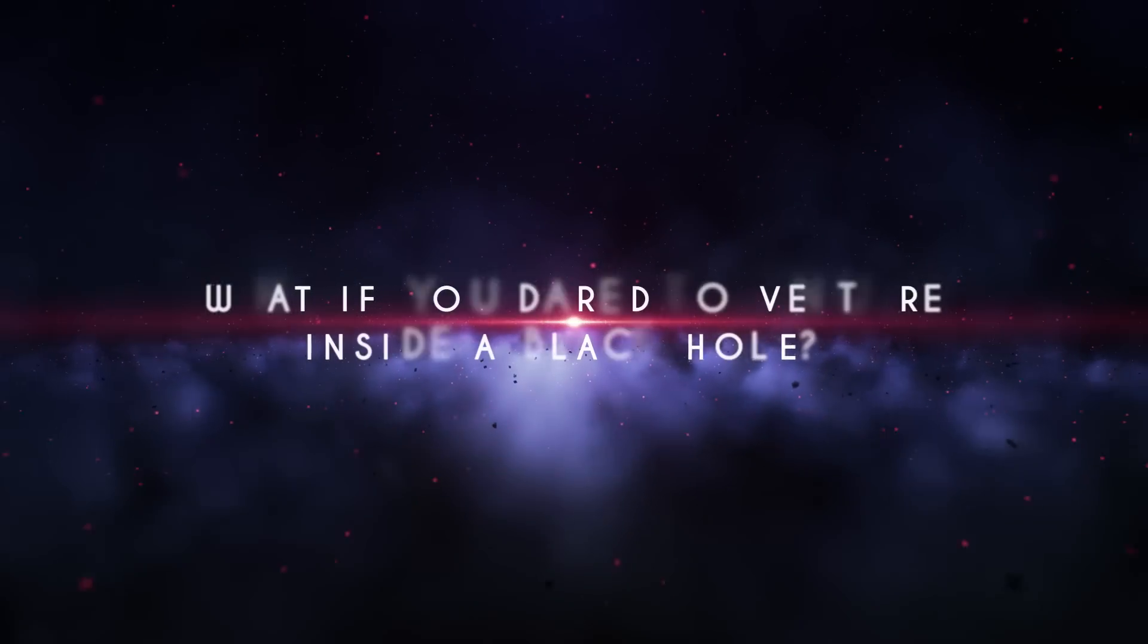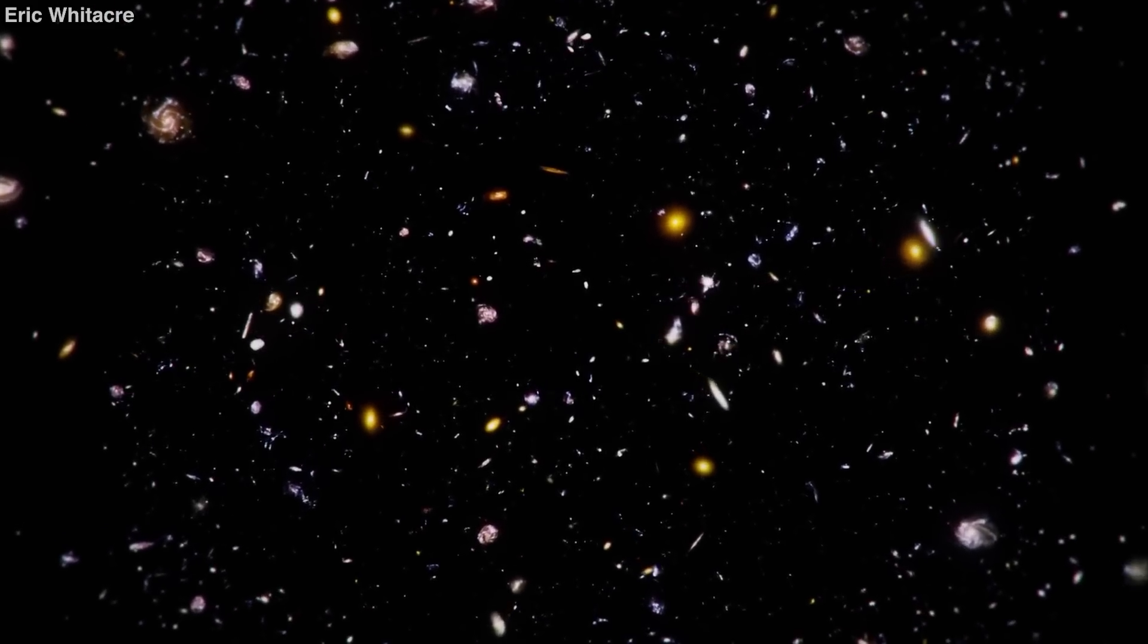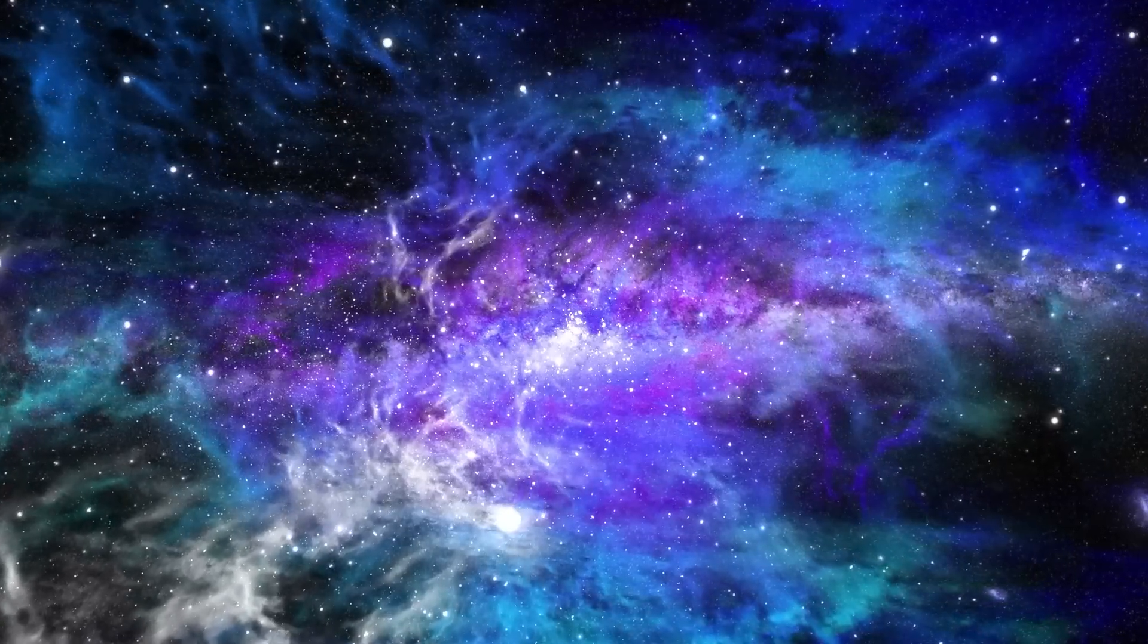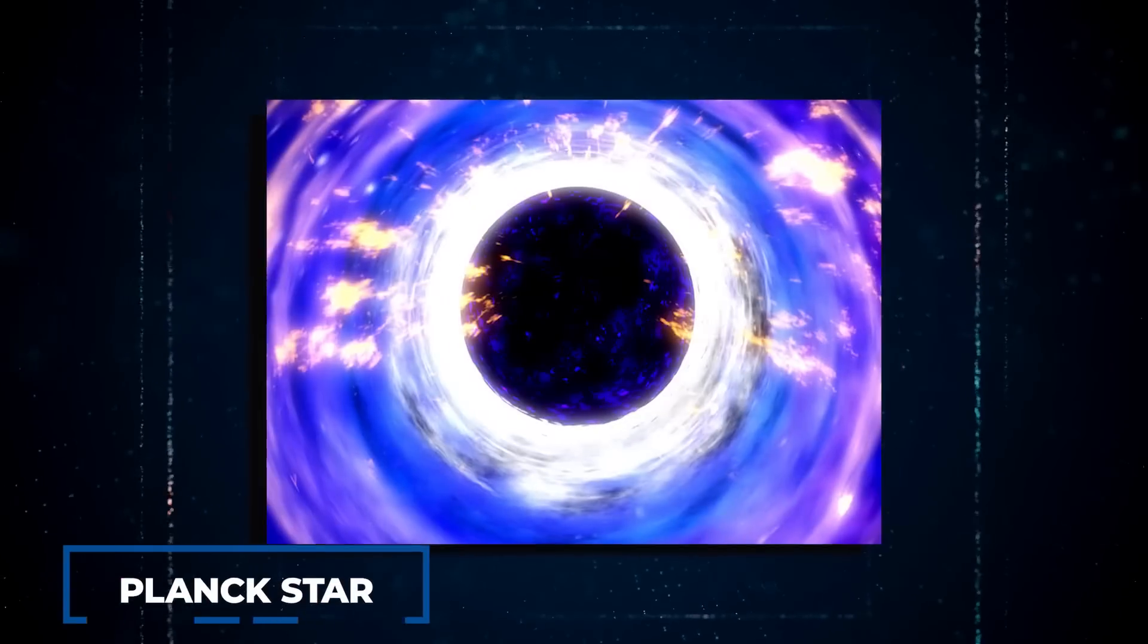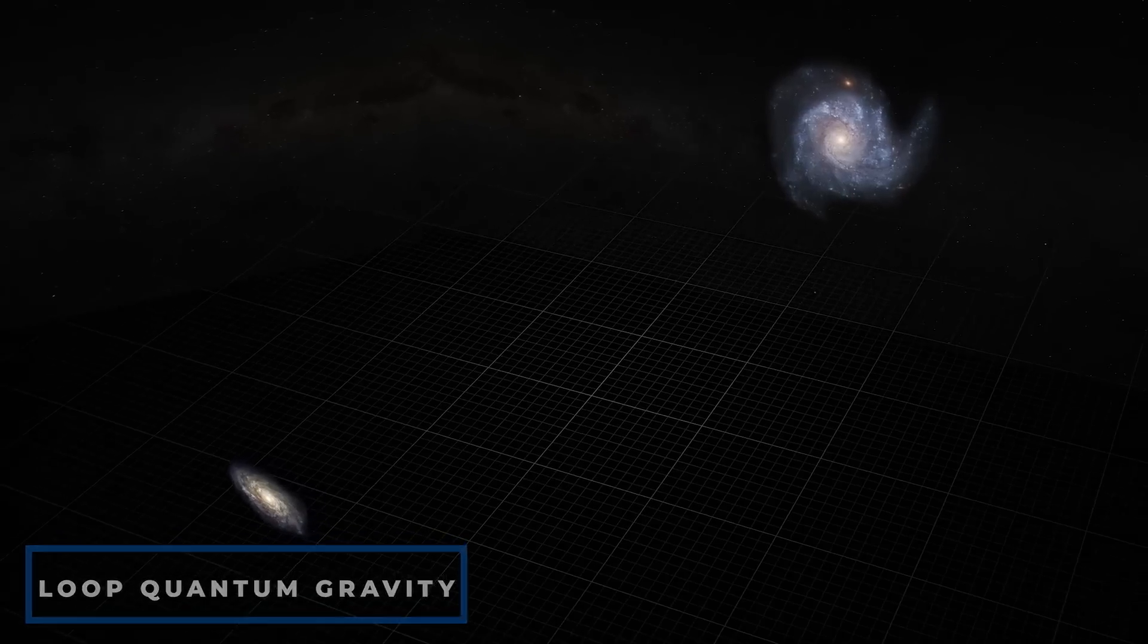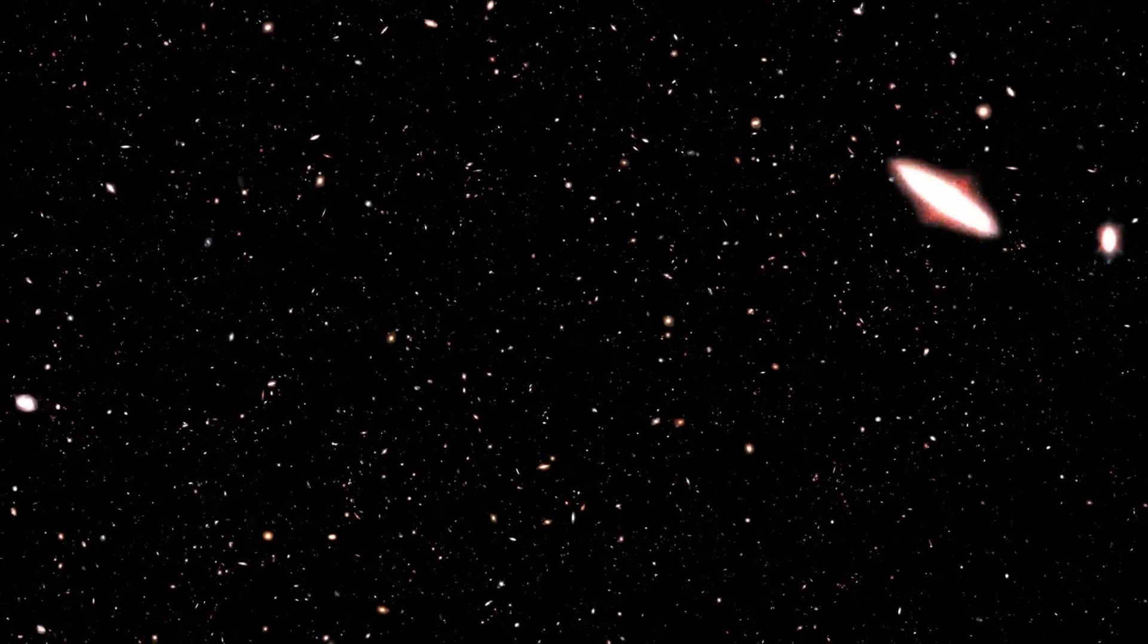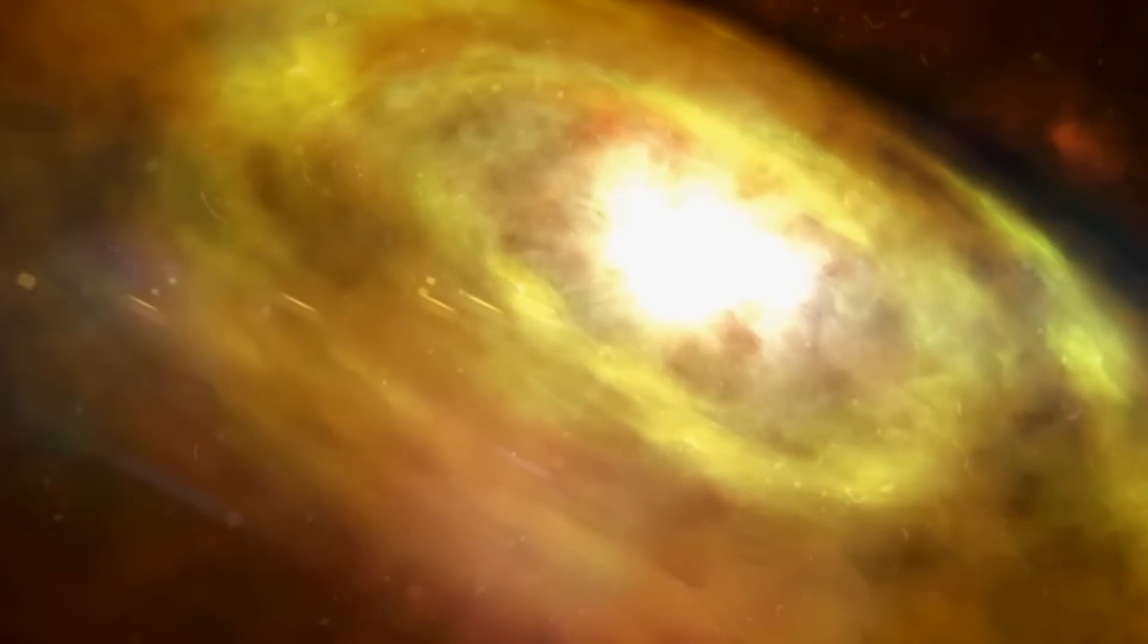However, what if you dared to venture inside a black hole? The possibilities of contributing to our knowledge of the universe are endless. It's not just a matter of being squished into an infinitely small point. New theories propose that matter could be compressed into the smallest possible volume, creating something called a Planck star. This idea comes from loop quantum gravity, which takes quantum mechanics to the next level by explaining gravity in a natural way. The chunkiness of space-time prevents singularities from forming, making black holes only temporary objects.